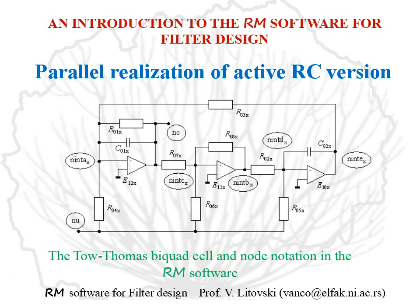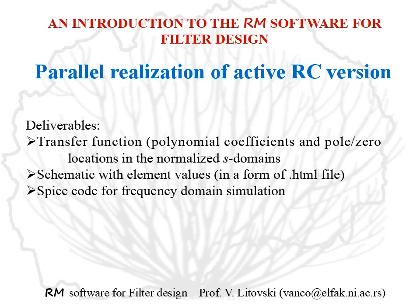Here is the Tow-Thomas Biquad cell, which is usually used in the RM software. In the case of parallel realization of the active RC version, the deliverables are the transfer function polynomial coefficients and pole-zero locations in the normalized S domain, a schematic with element values as an HTML file, and SPICE code for frequency-domain simulation. With small changes, the user may transform this SPICE code into one that performs time-domain simulation.